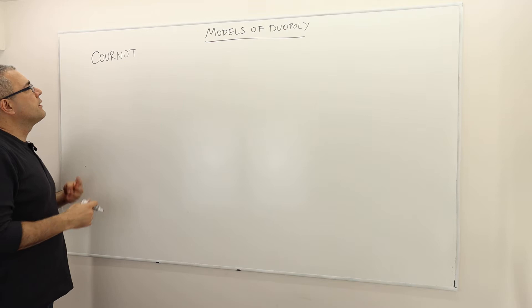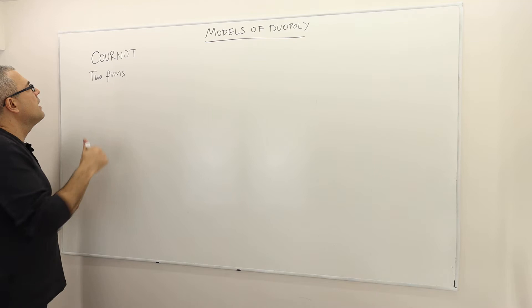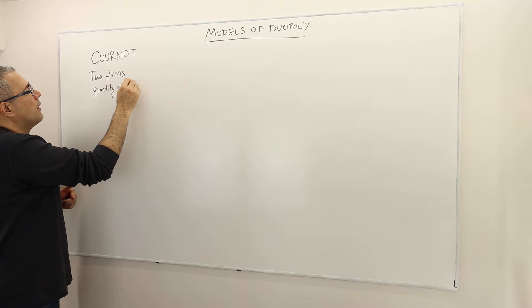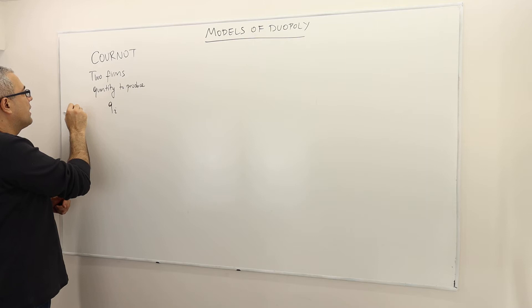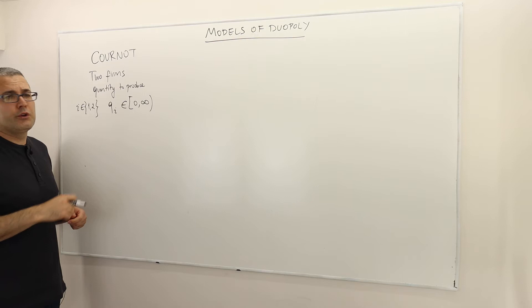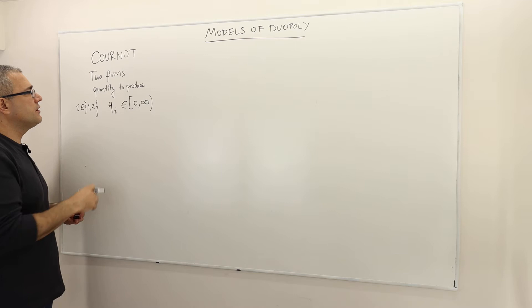According to Cournot there are two firms — this is a strategic environment — firm one and firm two, and they produce exactly the same good. Each firm selects how much quantity to produce. Firm i, where i is either one or two, chooses qi in between zero and infinity, so firms can produce any quantity they like. There are infinitely many strategies for each firm.